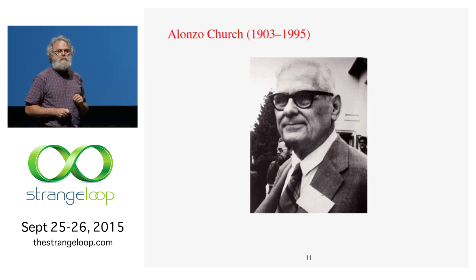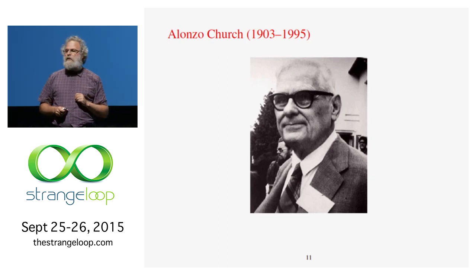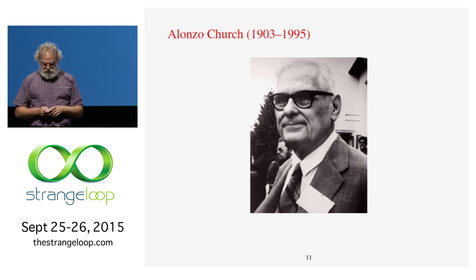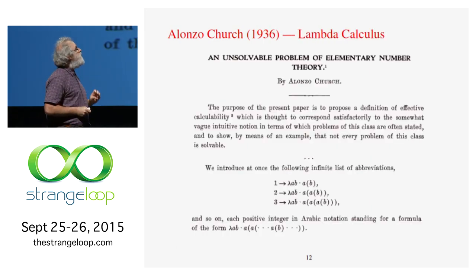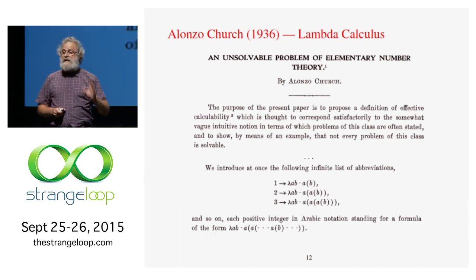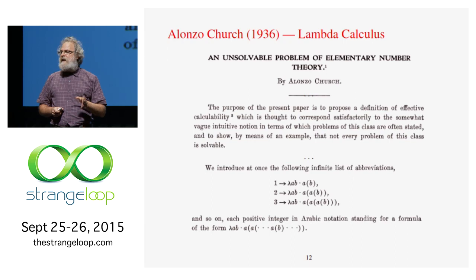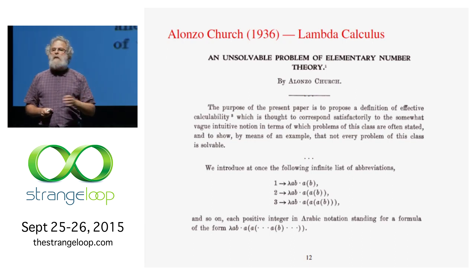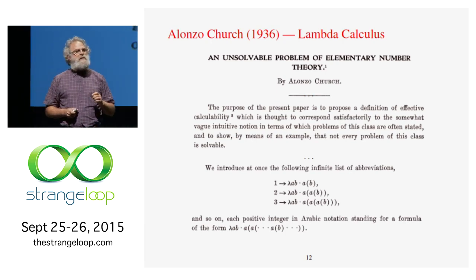The first solution was proposed by Alonzo Church in Princeton. He came up with lambda calculus in 1932, and by 1936 he had used it to show that, yes, if an algorithm is what you can express in lambda calculus, then the Entscheidungsproblem is undecidable. He actually did this by means of something else that was undecidable, which we now call the halting problem.